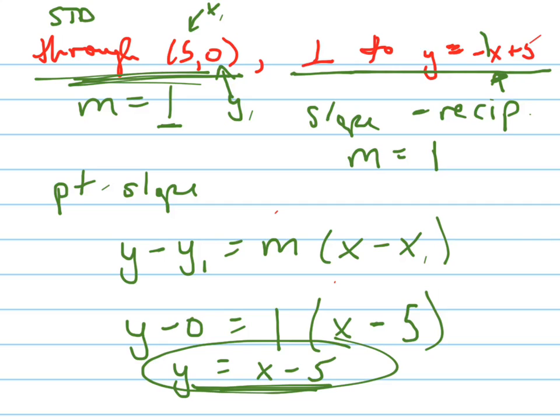But I can put it in standard form by moving the x to the other side by subtracting it and writing it first. Negative x plus y equals negative 5. And there's your answer.